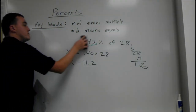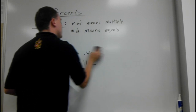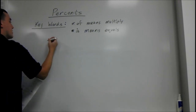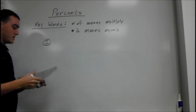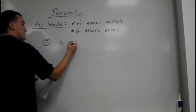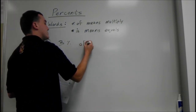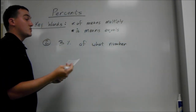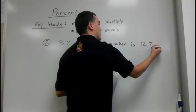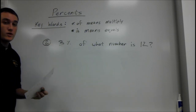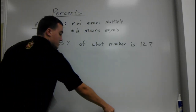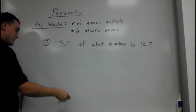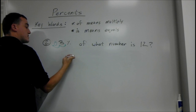Okay, next one. A little bit different — sometimes they're going to change up the sentence on you. 3% of what number is 12? So there's our question. Now we have to convert that to an equation. First thing we do, we need to convert 3% to a decimal, so we have to move it over two places — one, two — so this is going to be .03. So 3% as a decimal would be .03.